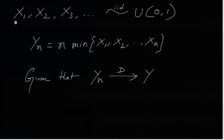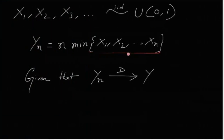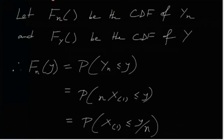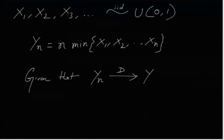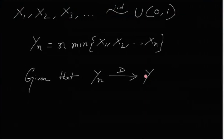It is given that the sequence X1, X2, X3, and so on follows IID Uniform(0,1). And Yn equals n times the minimum of X1 through Xn. It is given that Yn converges to Y in distribution. This means the distribution function of Yn equals the distribution function of Y at all points where the distribution function of Y is continuous.